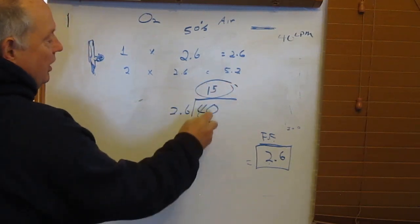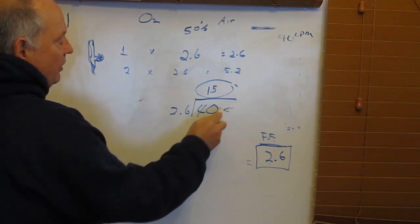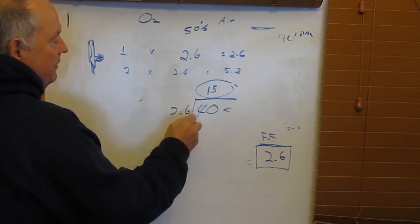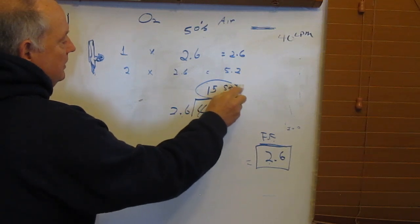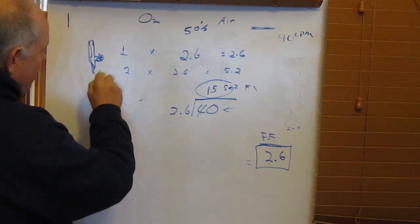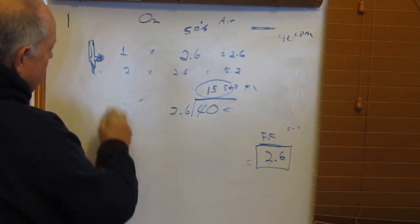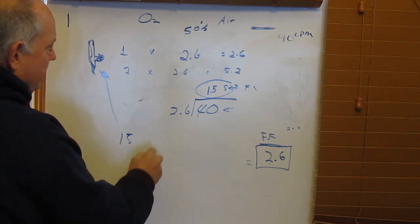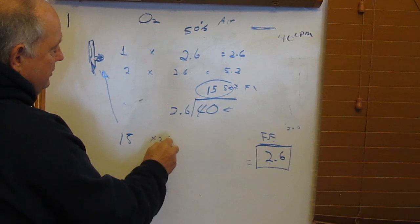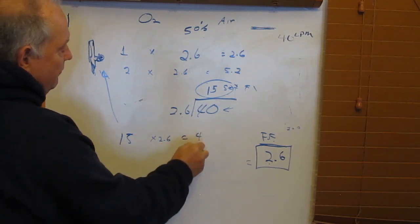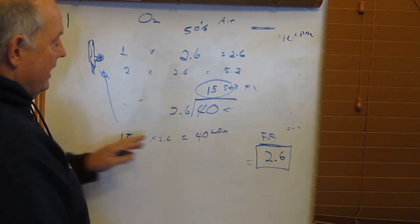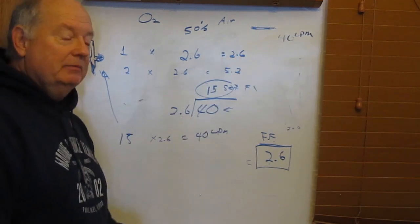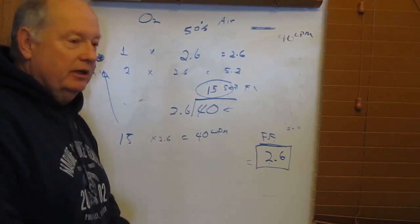In other words, our desired flow divided by our flow factor will give us our set flow. So we turn our knob to 15 liters. Multiply by our 2.6, that will give us 40 liters per minute. And that's what we need to meet Mr. Jackson's inspiratory demand.